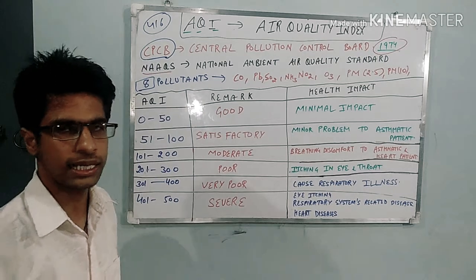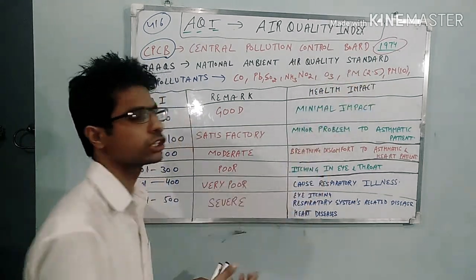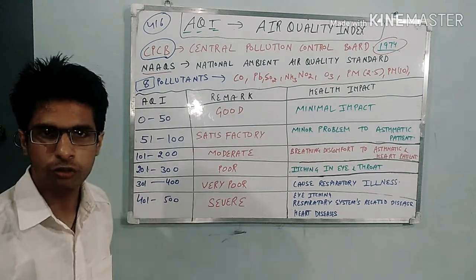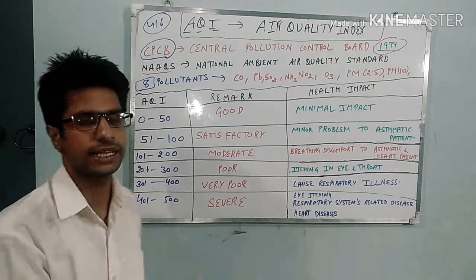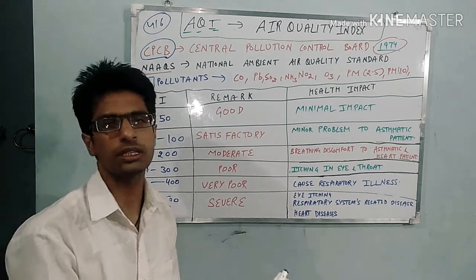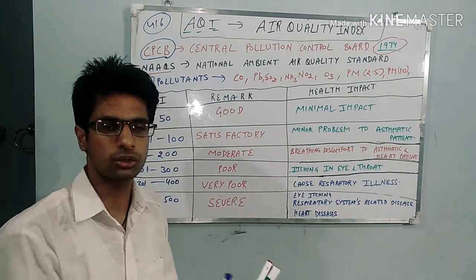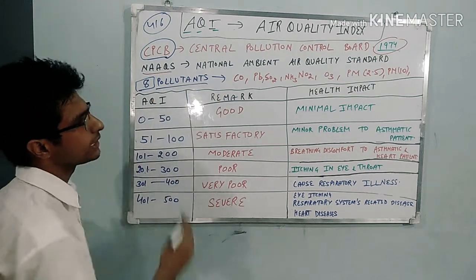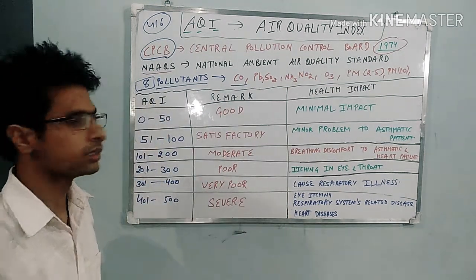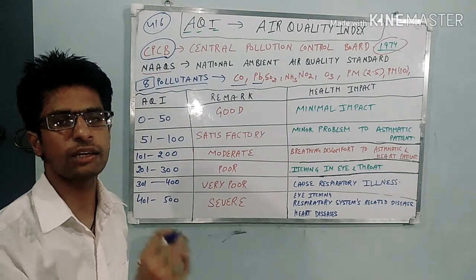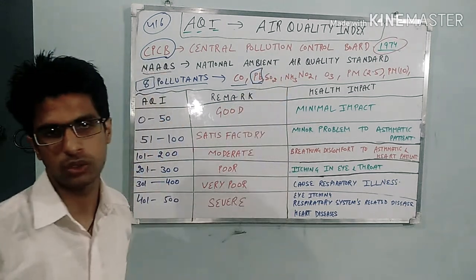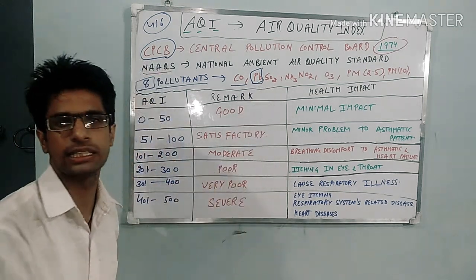For CSIR students it is difficult to memorize the exact concentration of these pollutants, but we can memorize the Air Quality Index. Once you see it on your smartphone, you can easily remember it and spread awareness about the environment. The eight pollutants in NAQS include carbon monoxide, lead, sulfur dioxide, and ammonia. Notably, lead is a natural pollutant — a question asked in ICMR 2019.